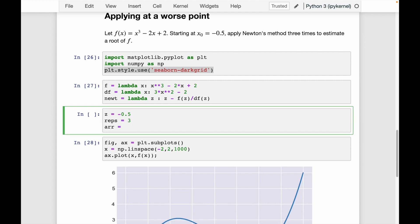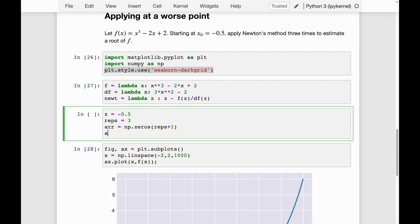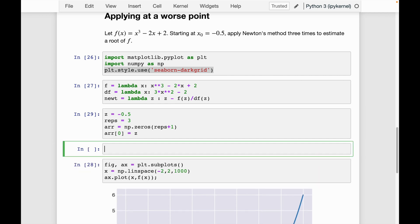I'm going to create a numpy array to store the results. So np.zeros of reps plus one because remember the first entry is our starting point and then we fill in the rest with the results from running Newton's method each time.